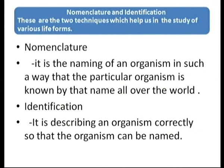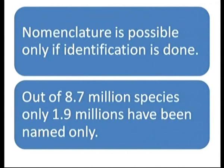Identification is describing an organism correctly so that it can be named. Nomenclature is possible only if identification is done first. That is why, out of 8.7 million species, only 1.9 million have been named — because the description of many species is not yet complete.